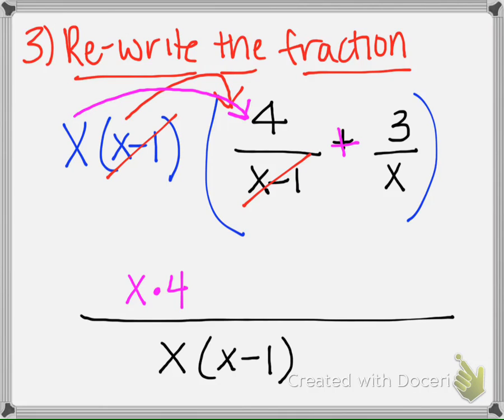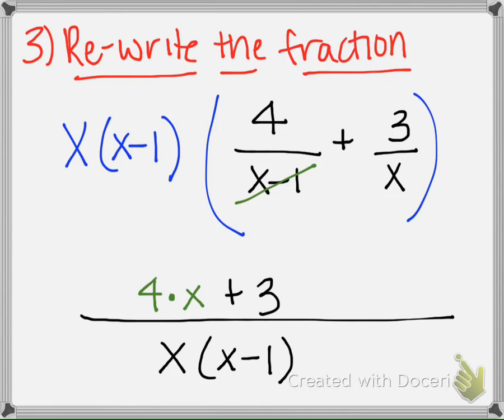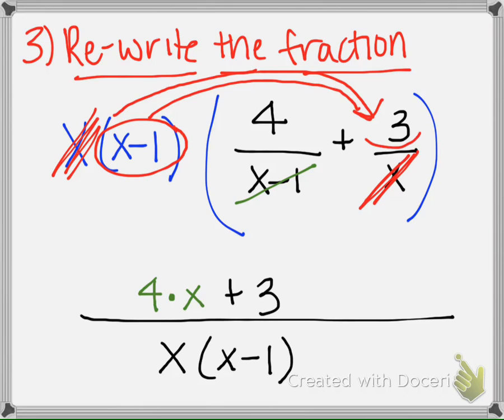And I'm going to bring this plus sign here and bring the 3 down here. Now, if I think about this being distributed over here, this x is going to cancel out with this x, and what's left is the x minus 1 that needs to be multiplied by the 3. So we're going to take 3 and multiply it by x minus 1.